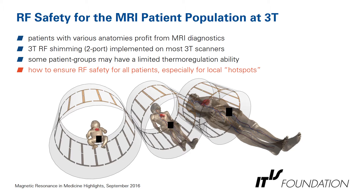Some background for the study: RF safety for the MRI patient population at 3 Tesla. We have patients with very differing anatomies that profit from MR diagnostics — from a baby up to an adult obese model or patient. At 3 Tesla, we have RF shimming or two-port RF shimming implemented on most scanners. Additionally, some patient groups may have limited thermoregulation ability. The question is how to ensure RF safety for all patients, especially for local hotspots.